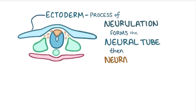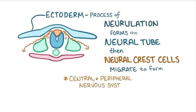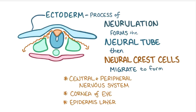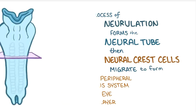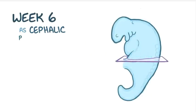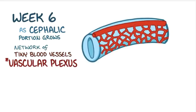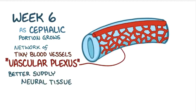Through a process called neurulation, the ectoderm forms the neural tube. From the neural tube, neural crest cells migrate to help form the central and peripheral nervous systems, as well as the cornea of the eyes and the epidermis layer of the fetal skin. During week 6 of development, as the cephalic portion of the neural tube grows, a network of tiny blood vessels called a vascular plexus develops to better supply that neural tissue.